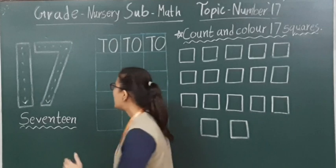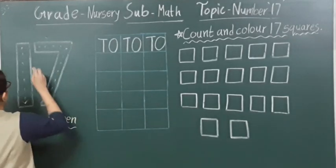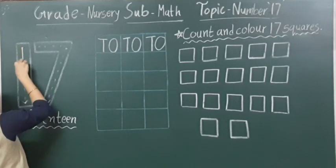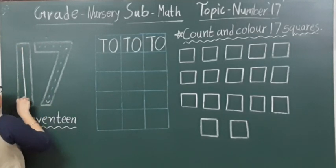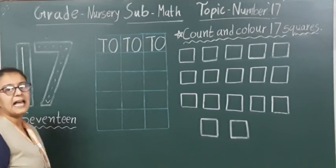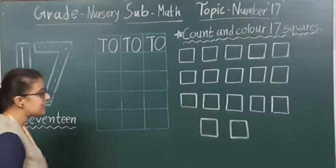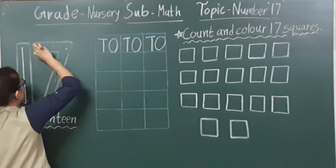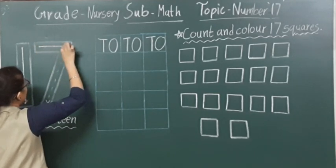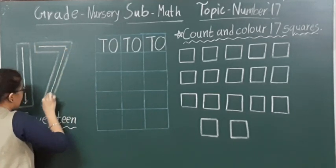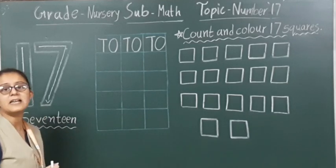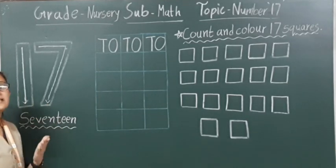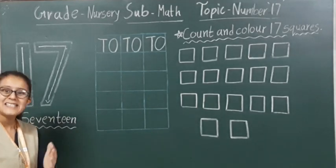To make number 17, we have to make first of all one standing line — that is from top to the bottom. That is standing line, which is number 1. And then we have to make one sleeping line and one slanting line — that is number 7. One and seven together means number 17.